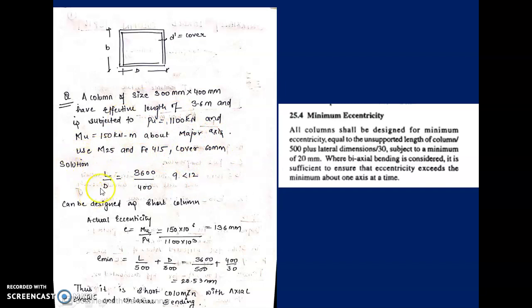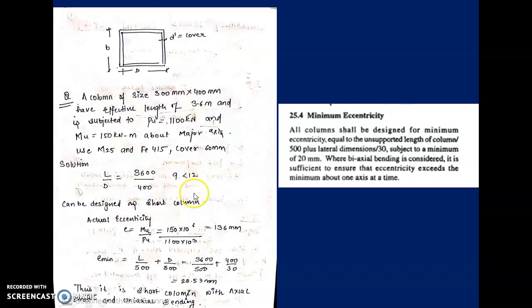First, we check whether it is a short or long column. L/D = 3600/400 = 9, which is less than 12, so our column is definitely a short column. We then check the actual eccentricity: eccentricity = Moment/Load = 150×10⁶ / (1100×10³) = 136 mm. The minimum eccentricity comes out to be 20.53 mm.